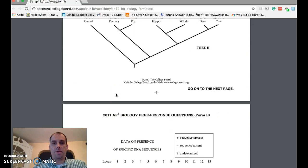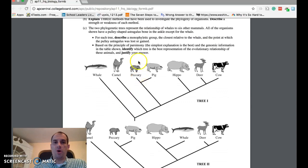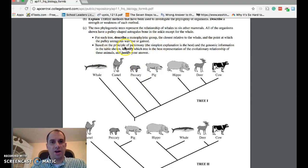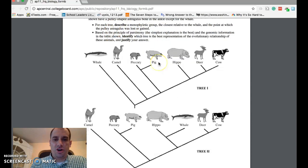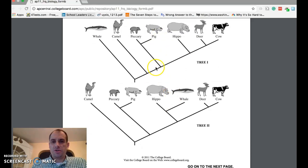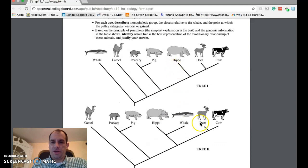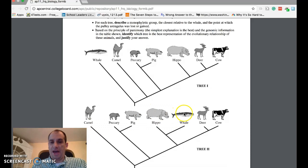Lastly, it wanted you to estimate where the bone either was gained or lost, the pulley astragalus. Sorry, I can't say this. I can't speak this morning. So if you think about the only organism, and if this is the correct phylogenetic tree, the only organism that does not have the pulley is the whale. So we would put that derived character right about here because every other organism has the pulley. The whale does not. So we would put that derived character right there.